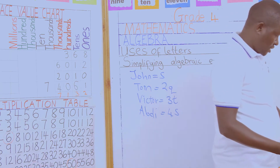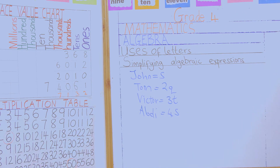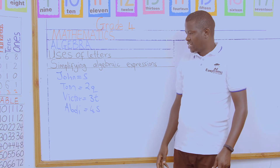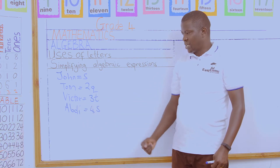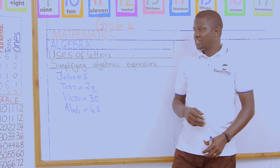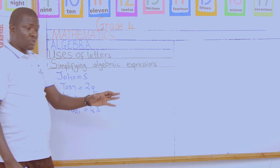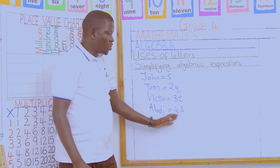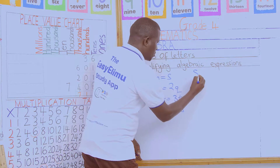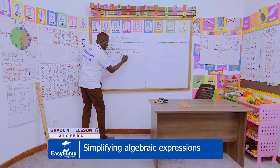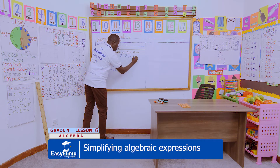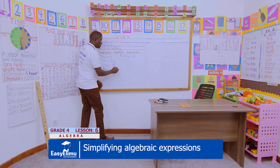These are the number of counters all together — they belonged to four boys. The first boy is John with S counters, the second is Tom with two Q counters, the third is Victor with three T counters, and then Abdi with four S counters. Because we have them in one group, we put them all together: S plus two Q plus three T plus four S. This algebraic expression represents this number of counters.